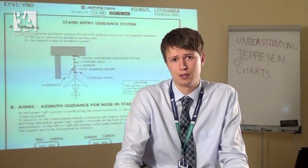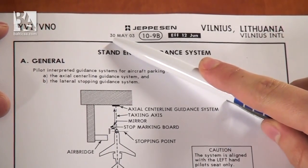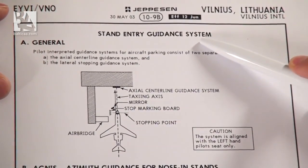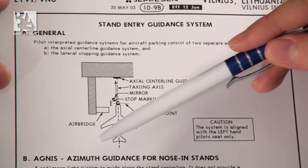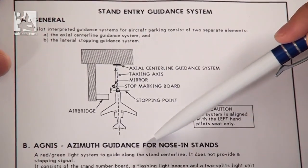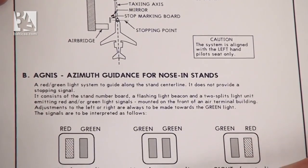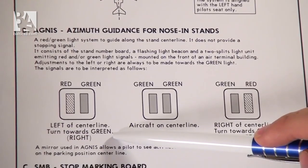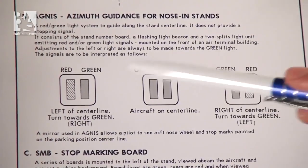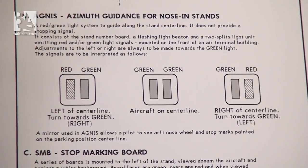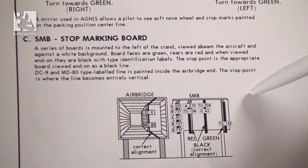The next chart is 10.9 Bravo, published 2003 May 30th, which is about the stand entry guidance system. First we have some general information about how it looks and what it consists of. Below that we have the information about azimuth guidance for nose-in stands — which basically tells you that if you have a right green light and left red light, you need to turn towards the green light to the right. If you have both green lights, the aircraft is on the centerline. If the green is on the left and red is on the right, you turn left. There is also a stop marking board which tells you where to stop the aircraft when parking.